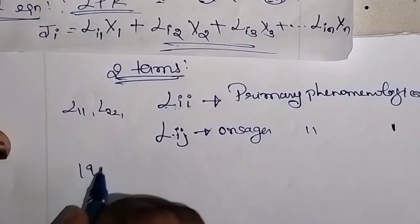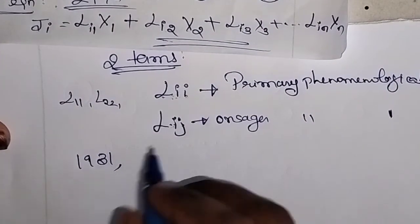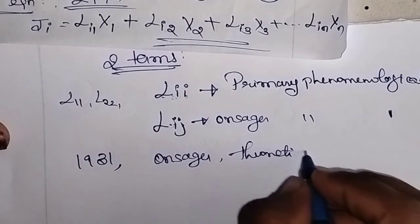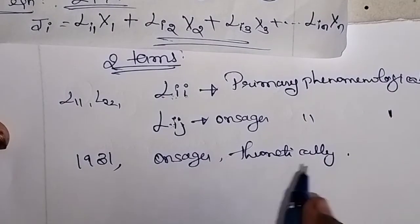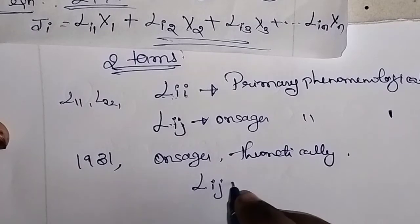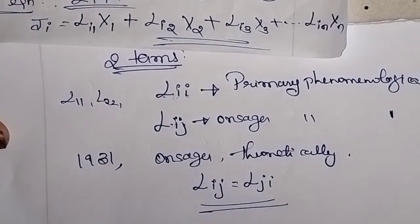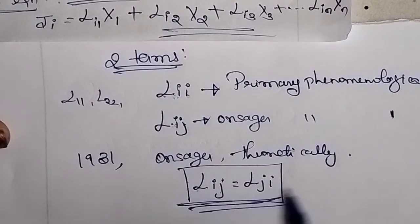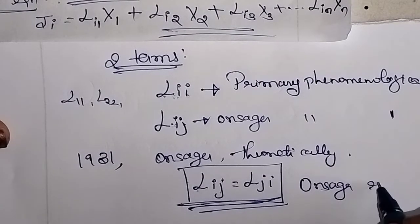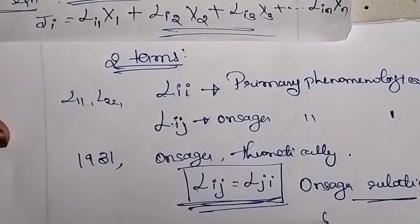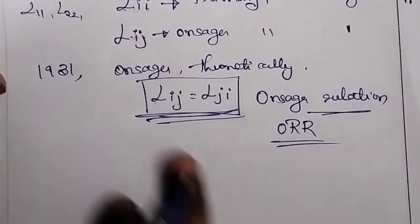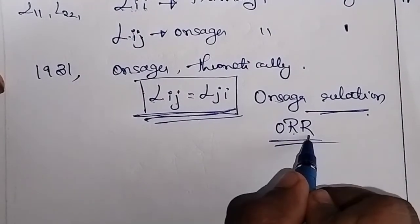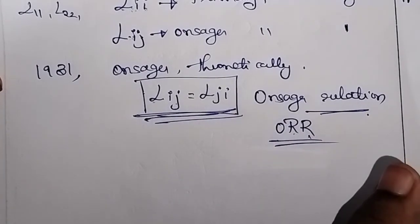In the year 1931, Onsagar proved theoretically that Lij = Lji. This particular relation is called the Onsagar relation, or Onsagar reciprocal relation. So the Onsagar reciprocal relation states that Lij = Lji.